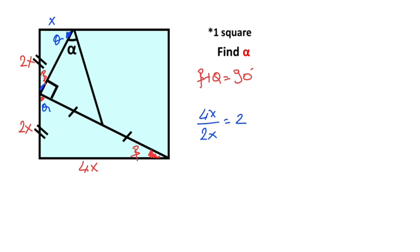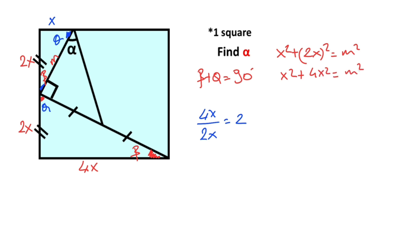This side I'm going to represent with m. For this triangle, if we apply the Pythagorean theorem: x squared plus (2x) squared equals m squared. So x squared plus 4x squared equals m squared, giving us 5x squared equals m squared. Taking the square root of both sides, m equals x root 5.